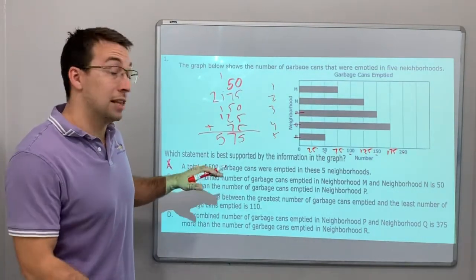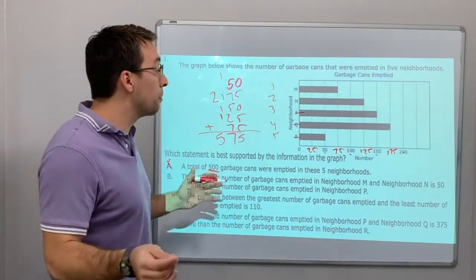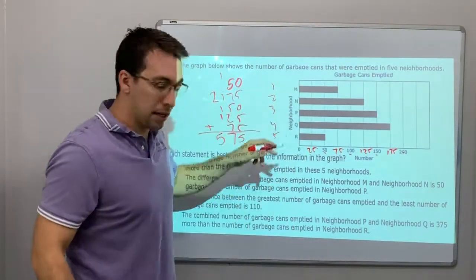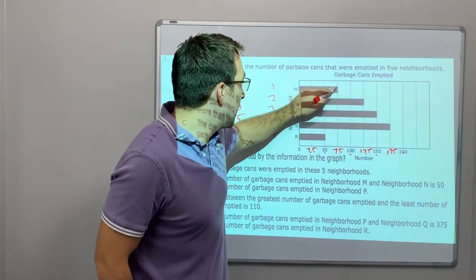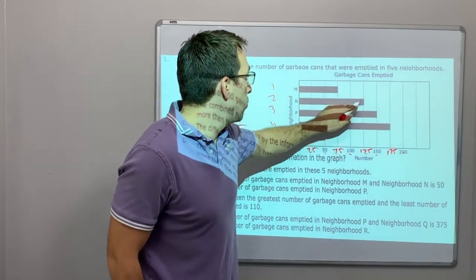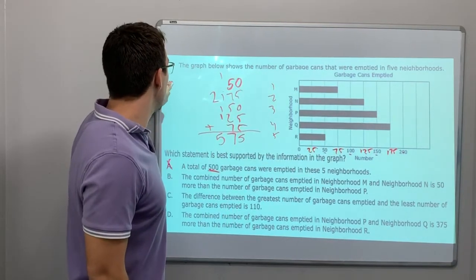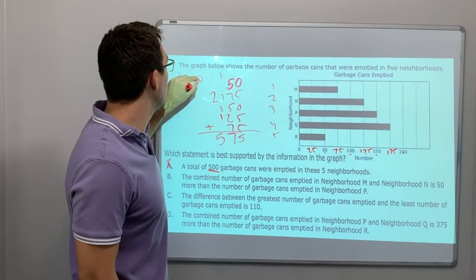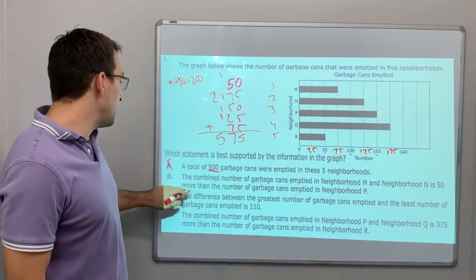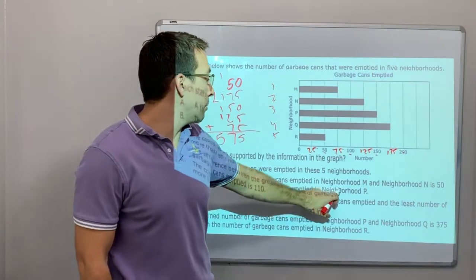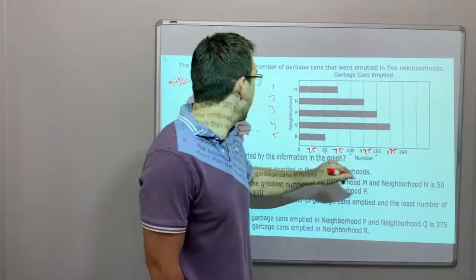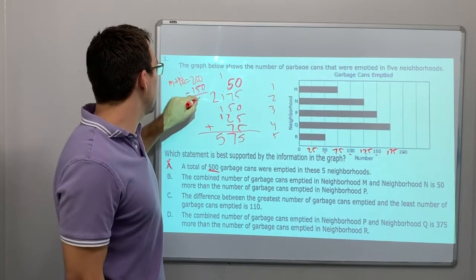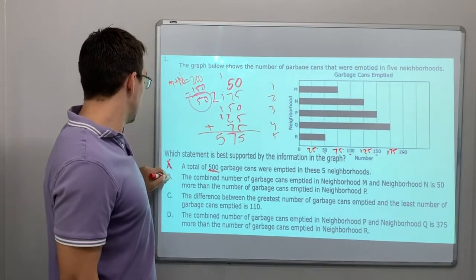So let's look at this. M and N is 75 plus 125, so that's 200. M plus N equals 200. M and N is 200, is 50 more than the garbage cans emptied in neighborhood P. What is P? P is 150. Yeah, that's right. 200 minus 150 is 50. That is correct.